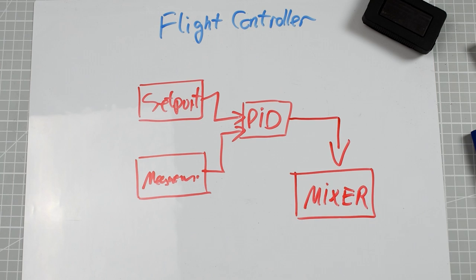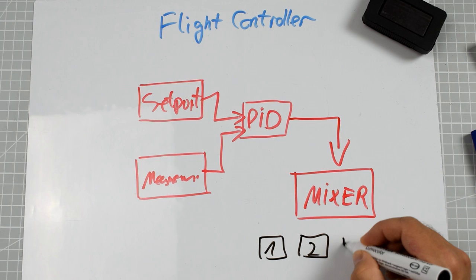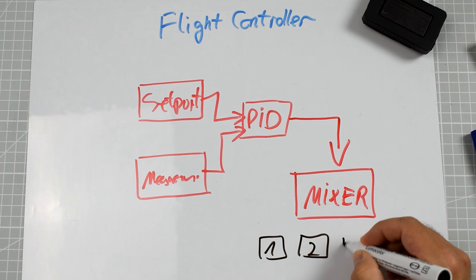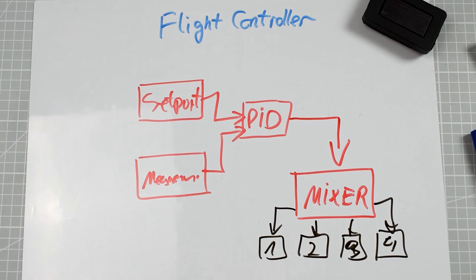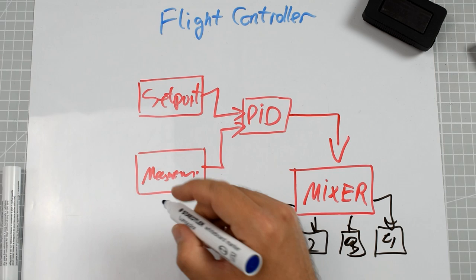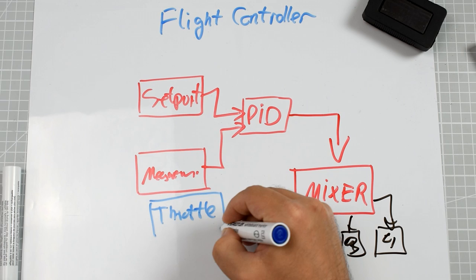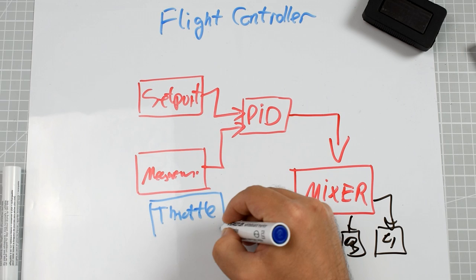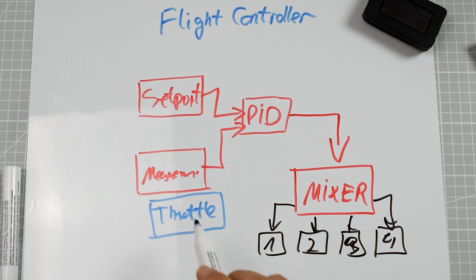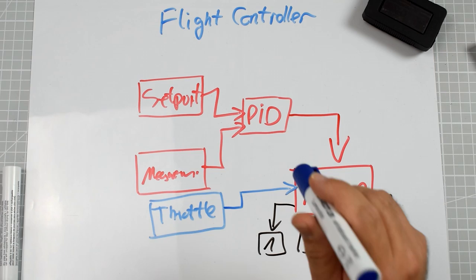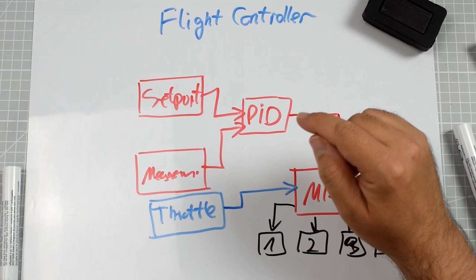That output is fed to the mixer. You've probably heard about the mixer once or twice. Only then is the information from the mixer fed to four motors. You might say this is absurdly simple — and yes, I'm forgetting something. We also have the fourth set point: throttle. Throttle position received from the radio is not fed directly to the PID controller or the motors. Throttle position is fed to the mixer, and only based on this information can the mixer compute the motor outputs.